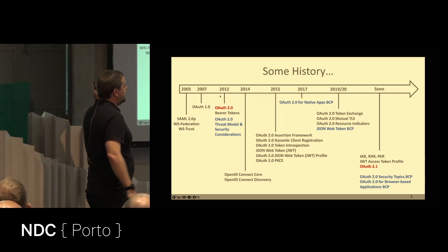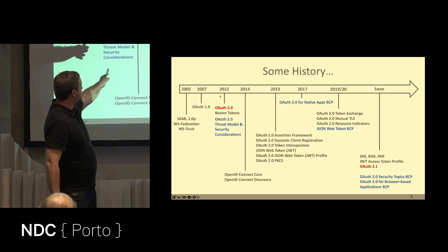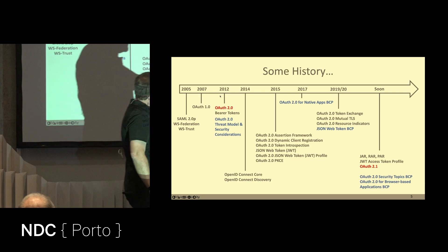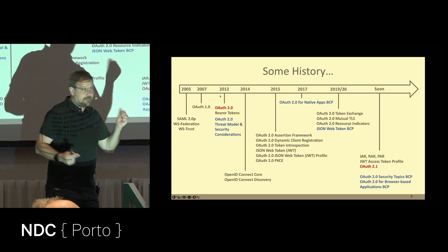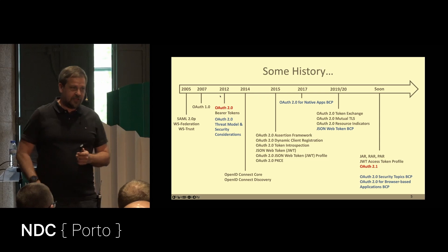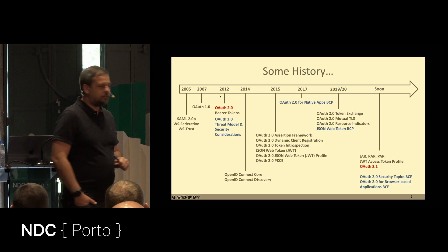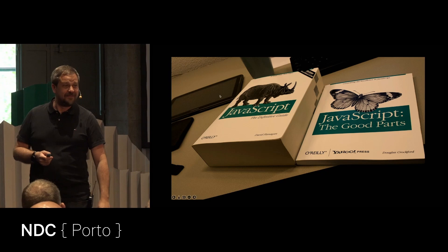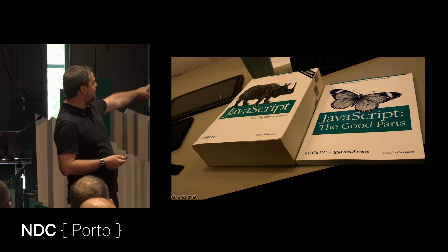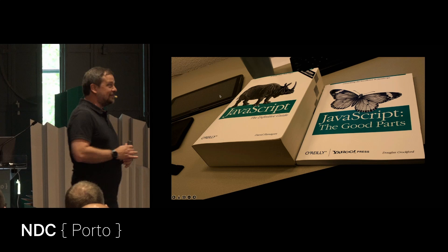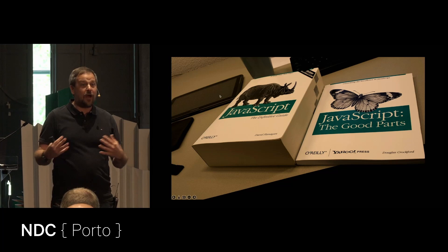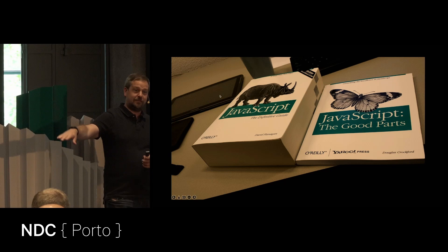There are a whole bunch of additional specifications that happened between 2012 and today — those are the ones we are not going to talk about, because they are a distraction for now. Here is the OAuth 2.1 I mentioned earlier — that is going to be the first-ever update to the original spec to make it more modern. That gave me the chance to do a talk called 'The Good Parts' — we probably all know the JavaScript Good Parts book, where the left one is all of JavaScript and the right one is the good parts. So I'm here teaching you the good parts, and once you appreciate them, it makes sense to know some of the bad parts as well.